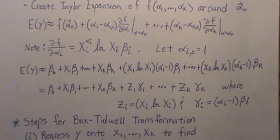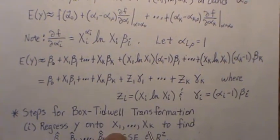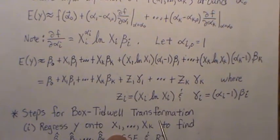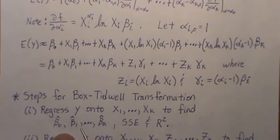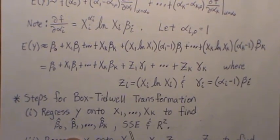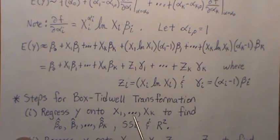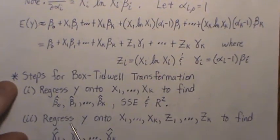So here are the steps. We want to regress y onto just the X's, not raised to a power, and we find the beta estimates. And we want and we need to take note of the sum squared error and R-squared - these are measures of how well the model's doing.